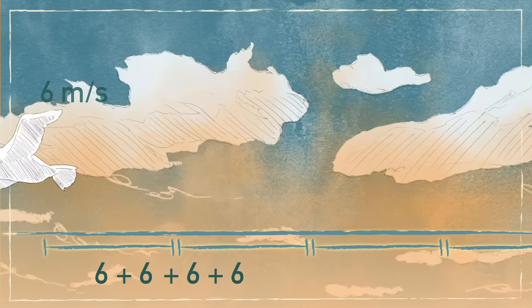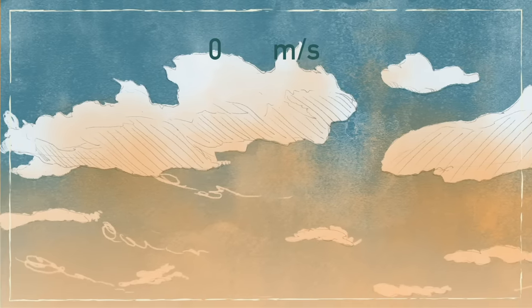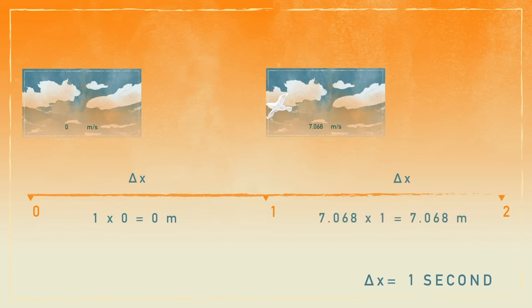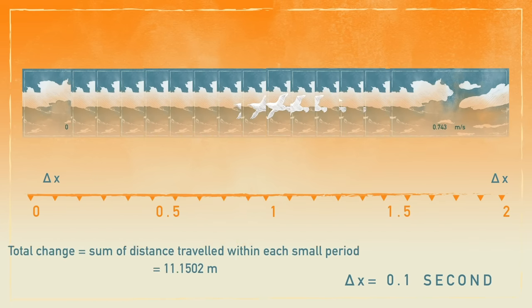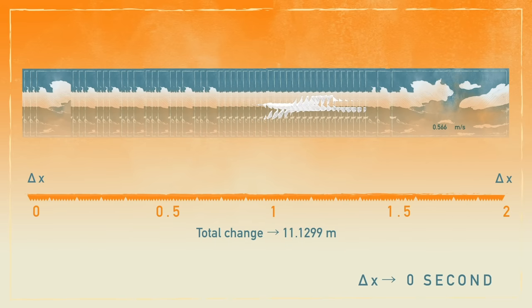To find out the distance traveled from the speed, we can multiply its speed and the change in time. But what if the speed is not constant? We can chop its motion up into very small periods delta x, and then add all the distances traveled within each small period to get the total change in distance throughout the entire motion. As delta x decreases, approaching zero, you can see the total change in distance approaching a certain value. This process is called integration.